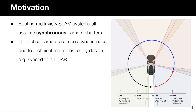For example, the cameras can be synchronized to another sensor such as a spinning lidar, which is a common setup in recent self-driving datasets. As you can see in this example on the right, the multiple cameras on the self-driving vehicle fire according to the rotating lidar, and the firing interval between cameras can be as large as 33 milliseconds. Ignoring this time difference can lead to quite significant localization errors if the vehicle travels very fast on a highway.